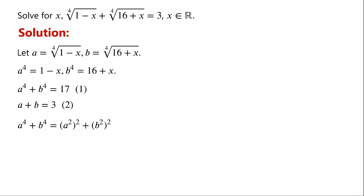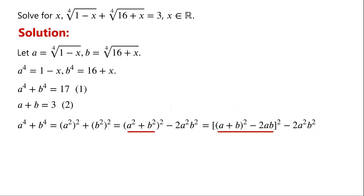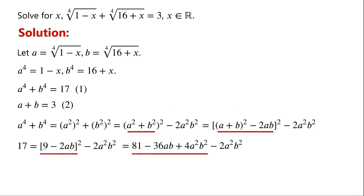We know that a⁴ plus b⁴ can be written as (a²)² plus (b²)², which equals (a² + b²)² minus 2a²b². And a² plus b² equals (a + b)² minus 2ab. Since a⁴ plus b⁴ equals 17 and a plus b equals 3, we can write: 17 equals (9 minus 2ab)² minus 2a²b².